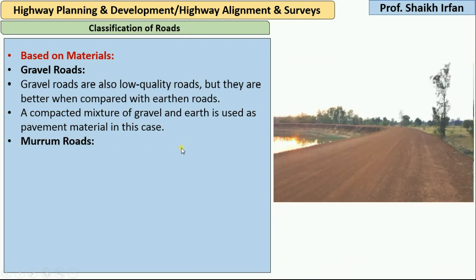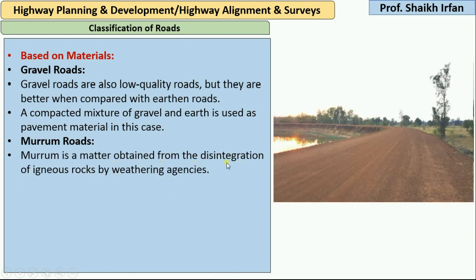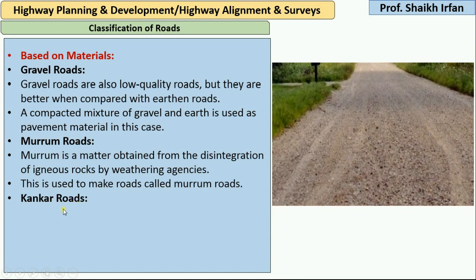Then we have Murrum roads. Murrum is a material obtained from the disintegration of igneous rocks by weathering agencies. Igneous rock is a type of rock formed after the cooling of magma or lava. Weathering agencies are those actions responsible for the breaking down or disintegration of rock. This type of road is also very low quality.